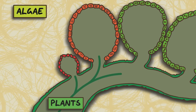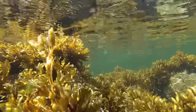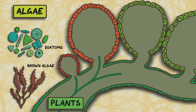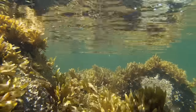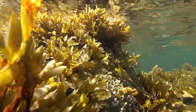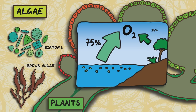Algae is a name used to describe a wide range of different unrelated organisms that have the ability to generate energy through photosynthesis, but not all of these are true plants. Algae come in many different sizes, from single-celled varieties to multicellular seaweeds. Single-celled algae known as diatoms and the multicellular brown algae are not considered true plants, even so they're very important to life as three quarters of the oxygen in the atmosphere is made by tiny single-celled phytoplankton.